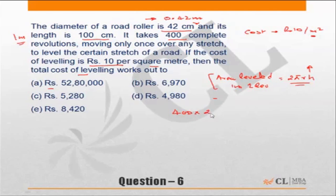times 2 times π, which is 22/7, times r. The diameter is 0.42 meters, so the radius is 0.21 meters or 21/100, times length which is 1 meter. This is the area which is leveled in 400 revolutions. So this will be equal to